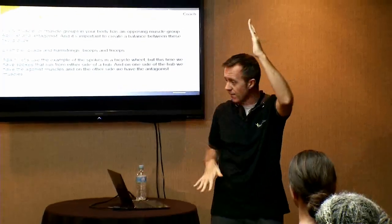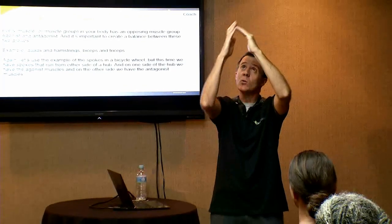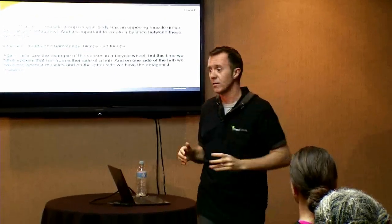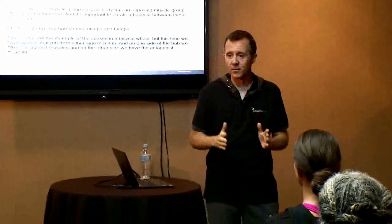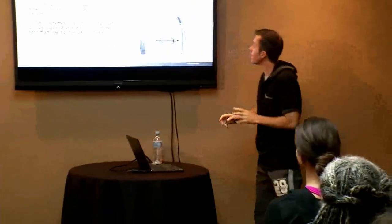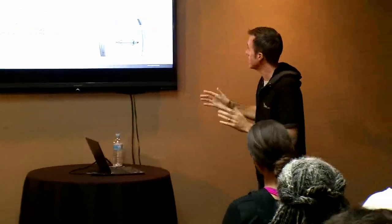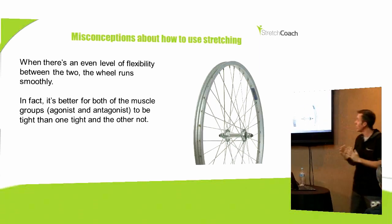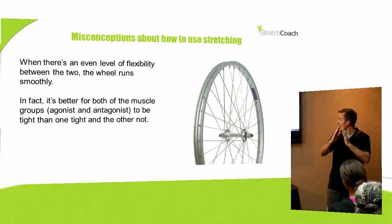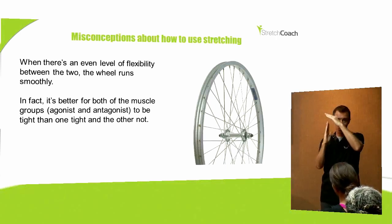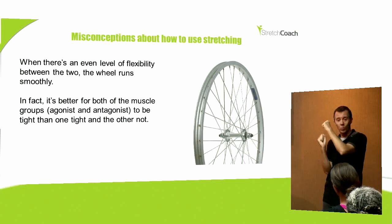But what happens if you have tight quadriceps, for example? It'll pull the wheel down like this and create a wobble in the wheel, and then the wheel runs out of alignment. So our goal is always to create a balance between these two muscle groups. It's actually better to have both muscle groups relatively tight than one muscle group tight and one loose, because you pull that wheel out of alignment.